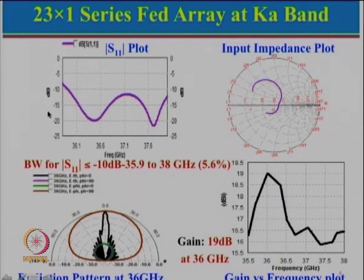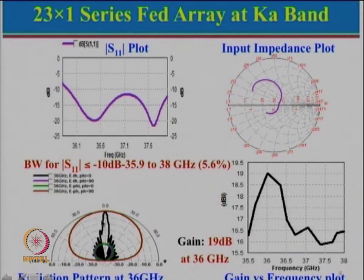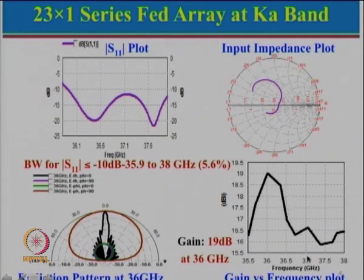Looking at the results: the S11 plot shows approximately 2 GHz bandwidth, which in percentage terms is about 5.6%. The radiation pattern plot at 36 GHz shows relatively low side lobe levels. The gain is fairly decent at about 19 dB, but the gain bandwidth is relatively small - the gain decreases noticeably across the band.